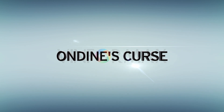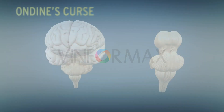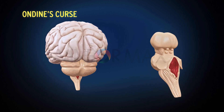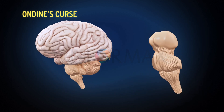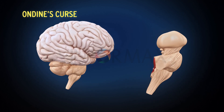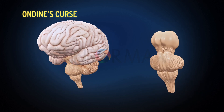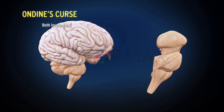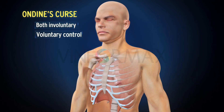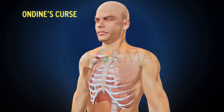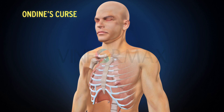Ondine's Curse. Respiration is regulated by both involuntary and voluntary control. In some conditions, involuntary respiration is lost while voluntary control is still intact. In this condition, a person is able to continue breathing only as long as he or she voluntarily remembers to breathe. As soon as the voluntary effort to keep breathing stops, respiration ceases.